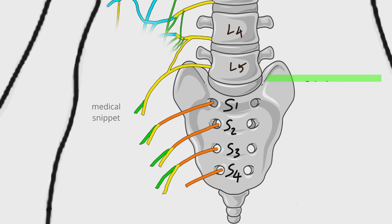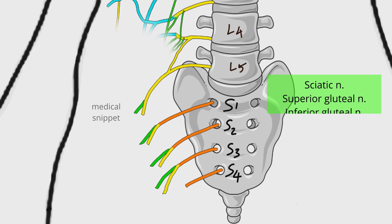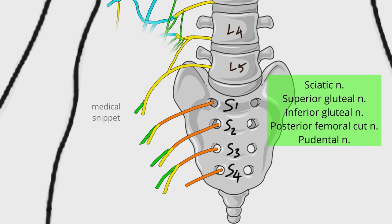The five major nerves are: the sciatic nerve, superior gluteal nerve, inferior gluteal nerve, posterior femoral cutaneous nerve, and pudendal nerve. Let's discuss each one of them in detail.